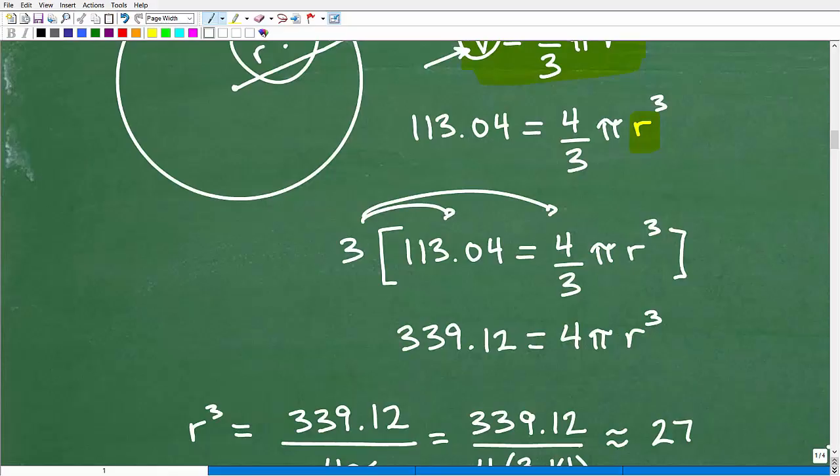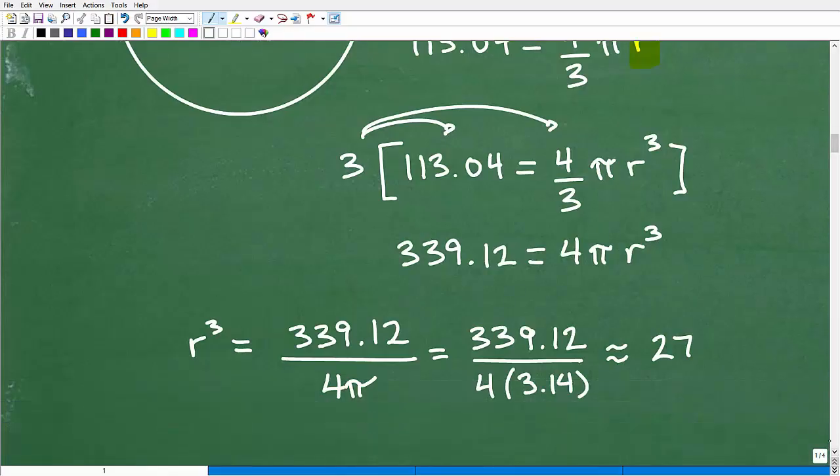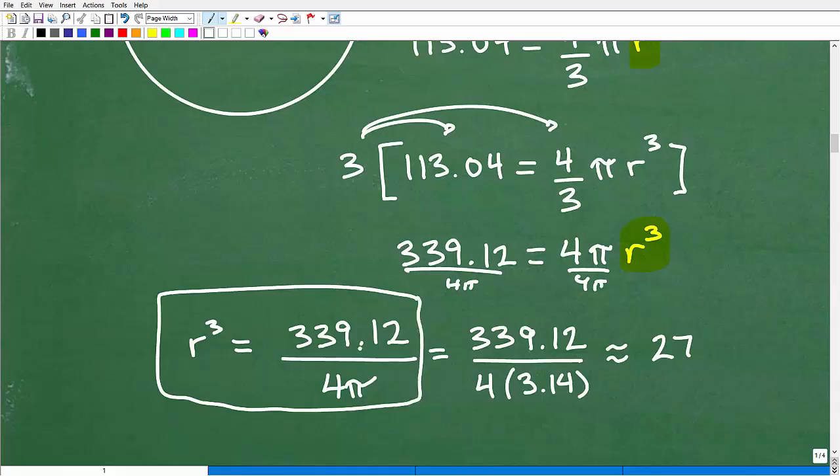So that's just an easier way to write this problem. So now I've got to solve for r cubed. So how do I do that? I want to divide both sides of the equation by this 4 pi. So that's what I'm doing right here. So r cubed will be equal to 339.12 divided by 4 pi.